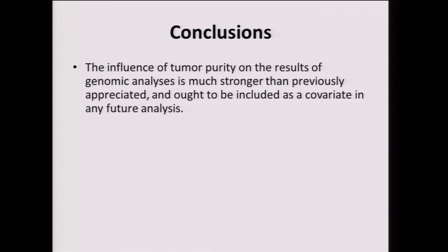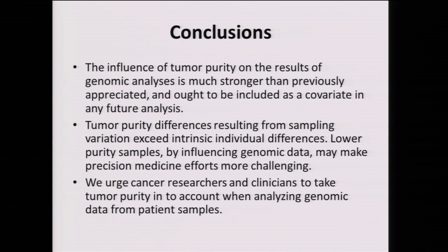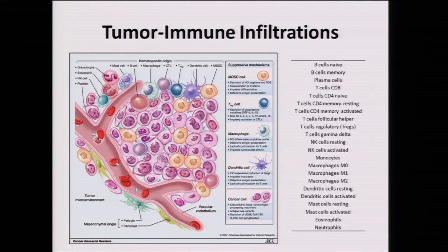To conclude: the influence of tumor purity on the results of genomic analysis is much stronger than previously appreciated and ought to be included as a covariate in any future analysis. Tumor purity differences resulting from sampling variation exceed interindividual differences. Lower purity samples may make precision medicine efforts more challenging. We urge cancer researchers and clinicians to take tumor purity into account when analyzing genomic data from patient samples. And while I talked about tumor purity as a whole, what we're really interested in is getting much deeper to understand all the different components of the tumor microenvironment — hopefully I'll elaborate on this next year.